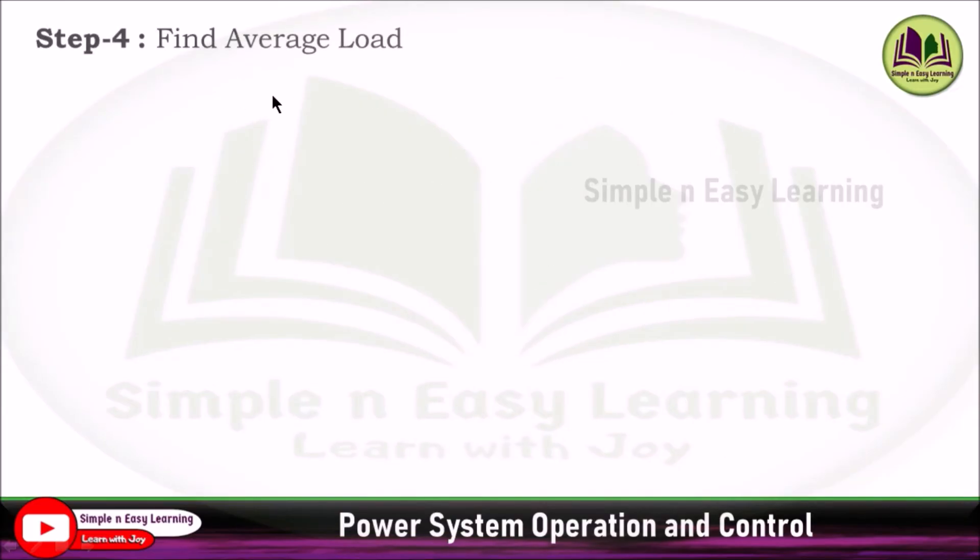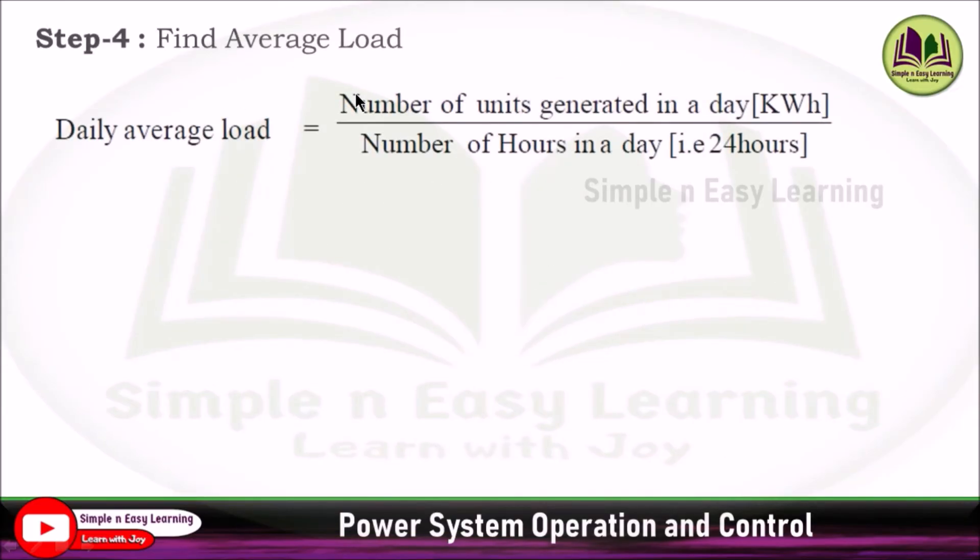Step 4: find average load. Direct formula, daily average load equals number of units generated in a day divided by number of hours in a day. In the problem, the given table represents only 24 hours, so we are taking the daily average load. Number of units generated in a day, that is we calculated in the previous step, 600 into 10 power 3 divided by 24 number of hours in a day. Direct answer will be 25,000 kilowatt as average load.